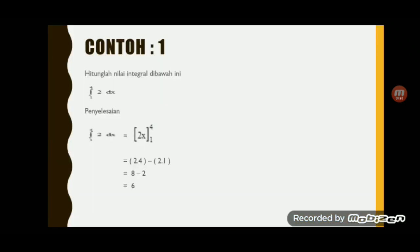Untuk contoh soal tentang integral tentu, yang pertama: hitunglah integral dari 2dx di mana batas bawahnya adalah 1 dan batas atasnya adalah 4. Cara penyelesaiannya, diintegralkan dahulu nilai 2dx sehingga diperoleh 2x. Batas atasnya adalah 4 dan batas bawahnya adalah 1. Selanjutnya nilai x diganti 4, berarti 2 kali 4, dikurangi x diganti 1, berarti 2 kali 1.